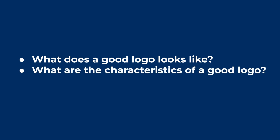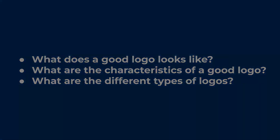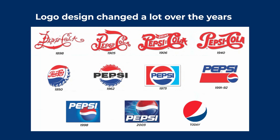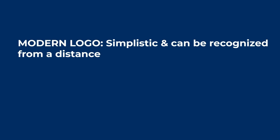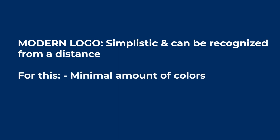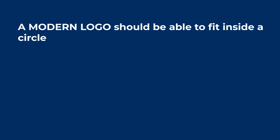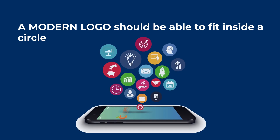What are the characteristics of a good logo? Logo designs have evolved a lot throughout the years. A modern logo should be simplistic and recognizable from a distance, which is why we tend to use a minimal amount of colors, big thick fonts, and simple shapes. Also, since we live in a world where everyone uses phones, a good logo should fit inside a circle and be recognizable on a small screen, since most businesses have mobile apps represented as a bubble.